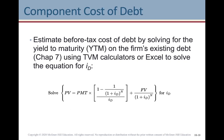For debt, things can get a bit trickier. Estimate the before-tax cost of debt by solving for the yield to maturity on the firm's existing debt — this is what we did in chapter 7. Use time value of money calculators or Excel to solve for the cost of debt. The formula is: PV = Payment × [1 − 1/(1 + id)^n] / id + FV / (1 + id)^n.